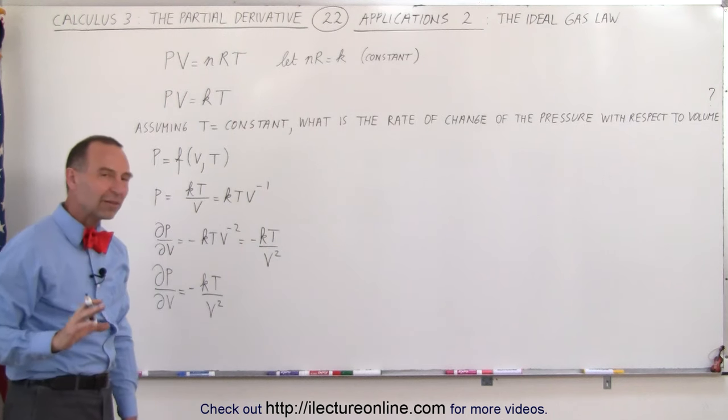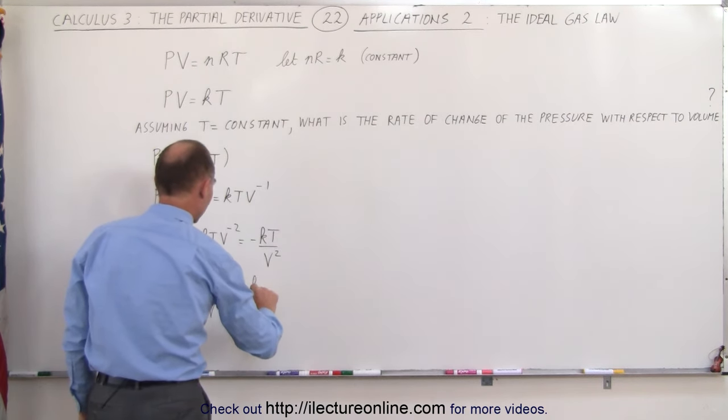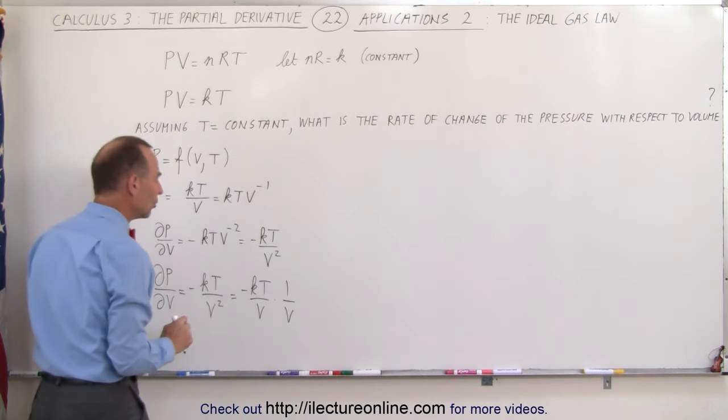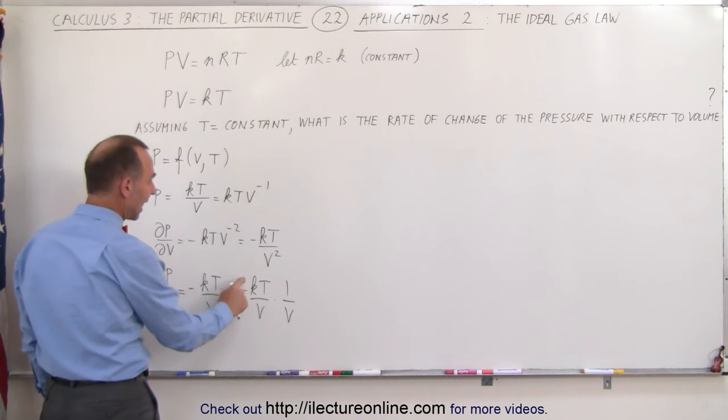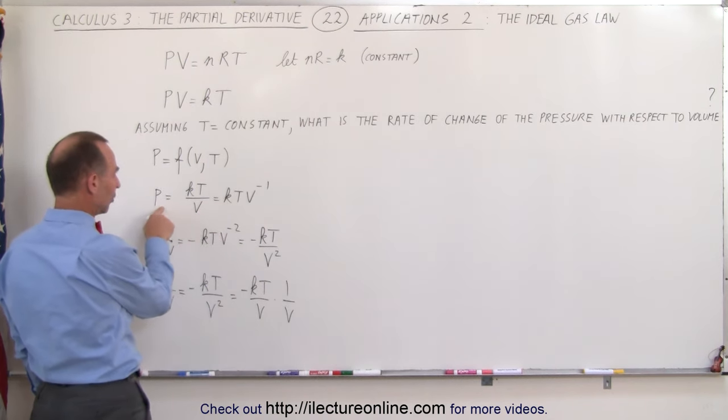Now we can write that slightly different. We could say, well, let's write this as minus KT over V times 1 over V. Why did I do that? Because notice that KT divided by V, and let me go over it right here, is equal to the pressure.